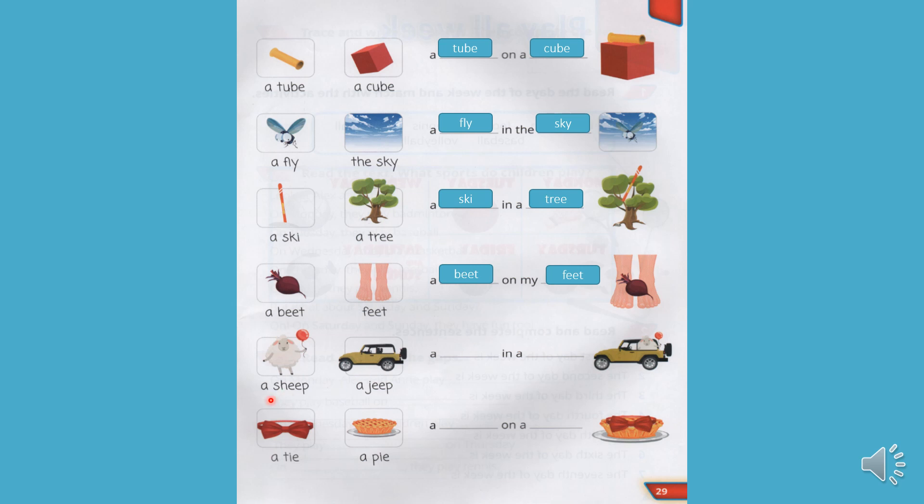A sheep. A jeep. Вівця у джипі. A tie. A pie. Кроватка. Пиріг. A tie on a pie. Кроватка на пирозі.